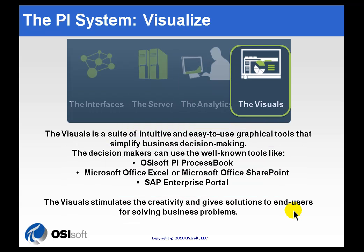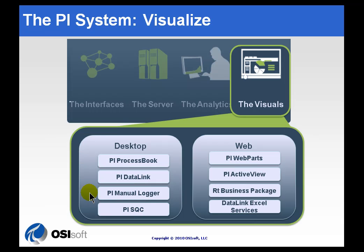Finally, we come to the visuals — how we present the information to the world. We have our flagship client application, PI ProcessBook, an application for displaying data which will be the focus of much of this class. We have add-ins to Excel for bringing data into Excel so that people can do analysis or reports. We have our PI Web Parts product, which makes use of Microsoft Office SharePoint. For those using the SAP Enterprise Portal, we have a mechanism to present data through that portal as well. We also have individual applications for manual inputs, statistical quality control, and different options for looking at this data on the web. ProcessBook has add-ins to support batches, as does Datalink, and we support Microsoft Excel Services that allow you to put Excel spreadsheets on a web page.